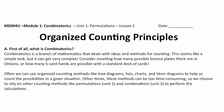Today's lesson is devoted to methods in organized counting — things we might do to keep track of different combinations and permutations. We'll use things like tree diagrams, lists, charts, and Venn diagrams to help us choose and count possible situations. As you'll see about midway through this lesson, these methods can become very, very time-consuming, so we try to rely on other methods like permutations and combinations to perform the calculations for us.